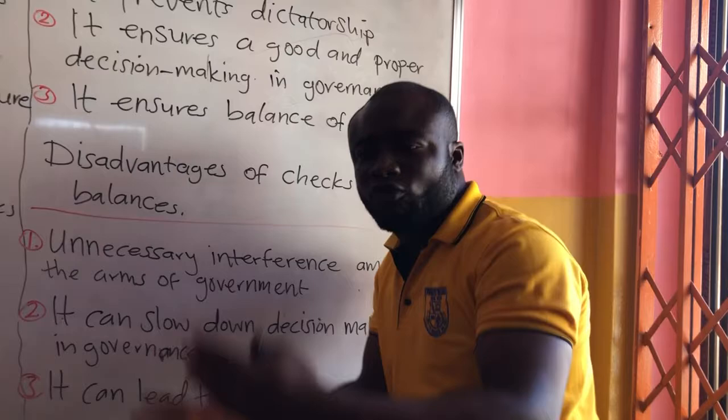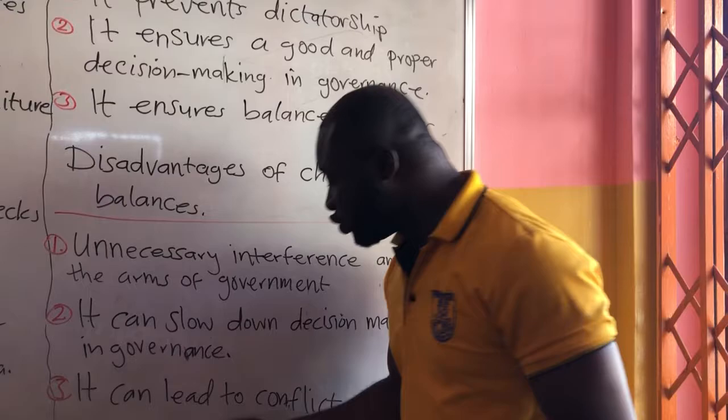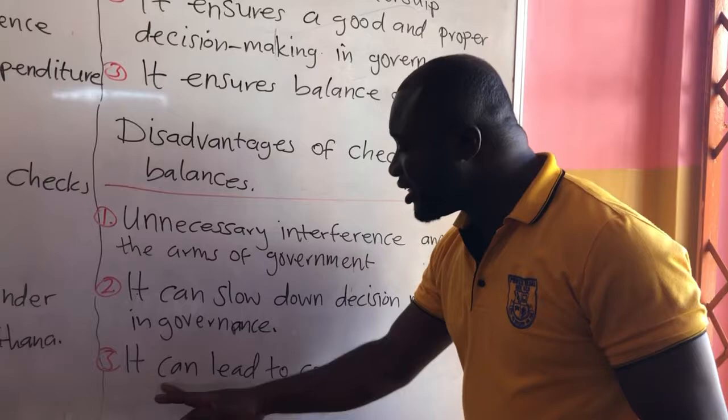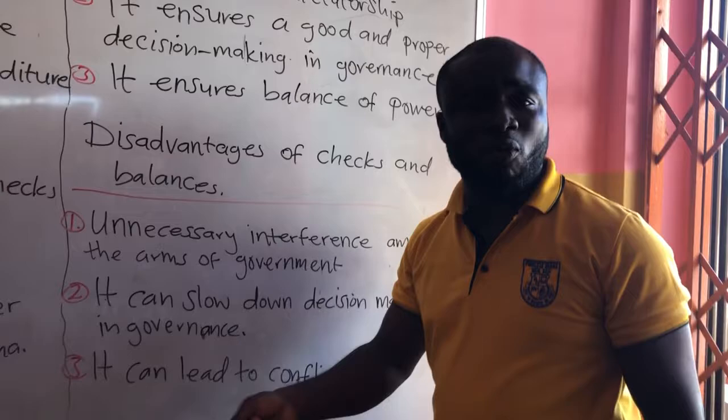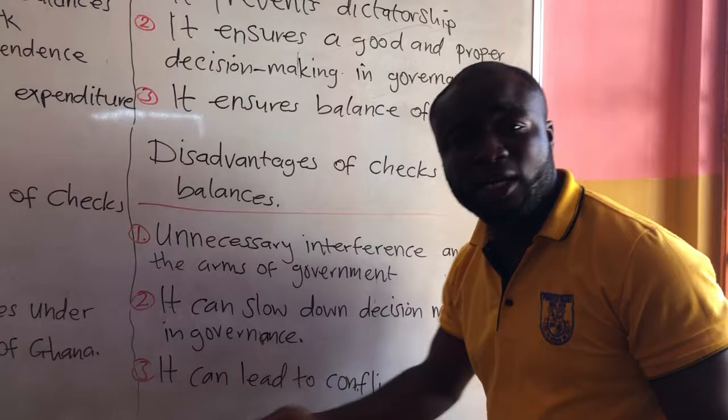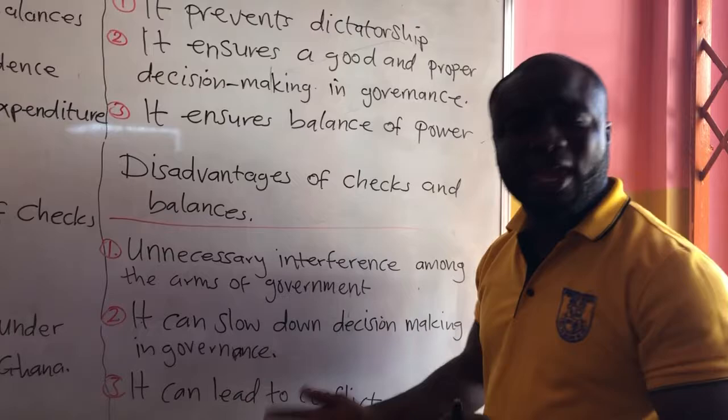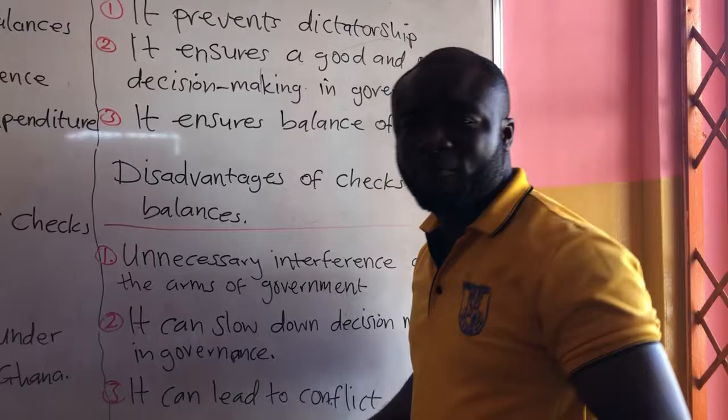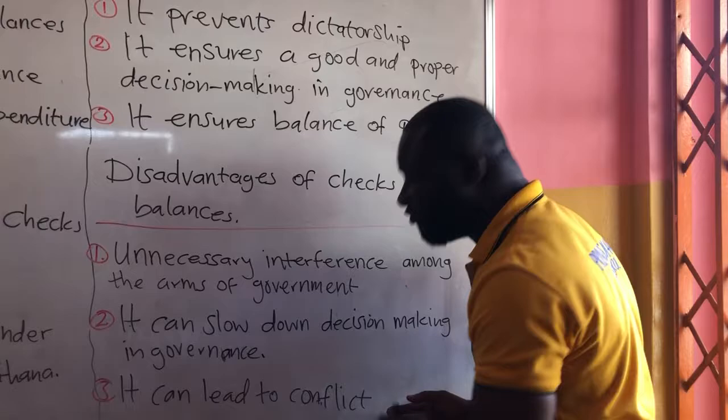The last disadvantage is that it can lead to conflict. For example, the legislature is supposed to make law, but the judiciary in a way also makes law — called case law. So you can see that there is a conflict of power, with one arm of government trying to perform the function of another arm of government, leading to conflict between the two arms of government.